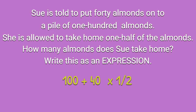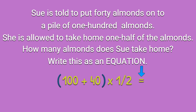But, as you'll see here, that is not the correct answer. In order to calculate the pile of almonds, we have to put parentheses around the 100 plus 40 section. There is a pile of 100 almonds — she adds 40 almonds, which gives her 140 almonds — and she is allowed to take one half of the 140 almonds home, so she multiplies 140 by one half. That is the expression. If we were asked to write this as an equation and solve it, we would have 100 plus 40 equals 140, times a half, equals 70.